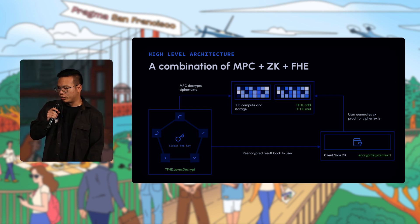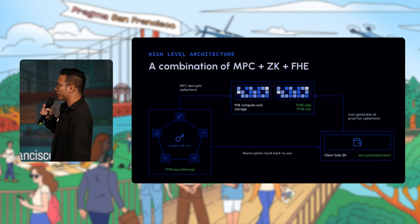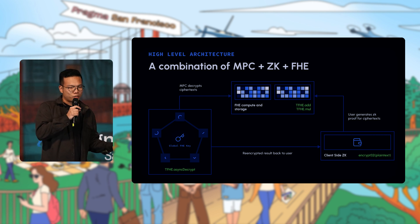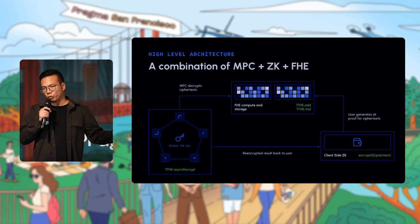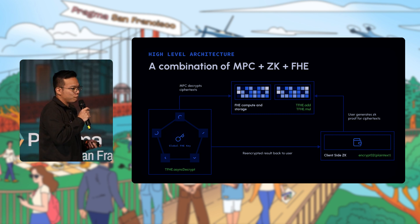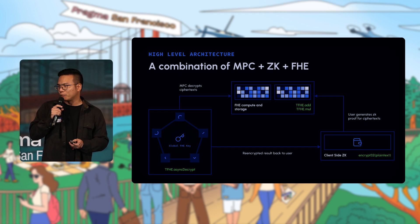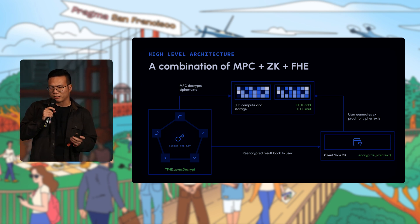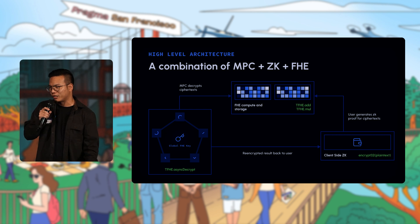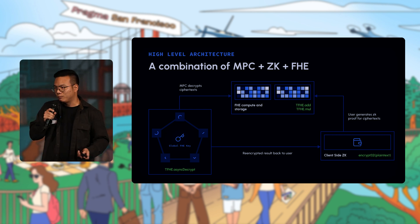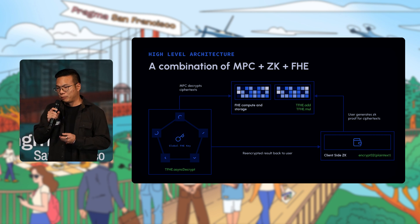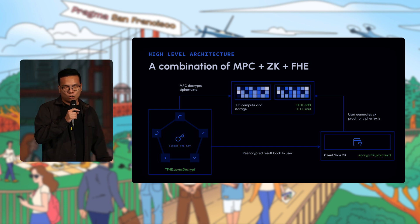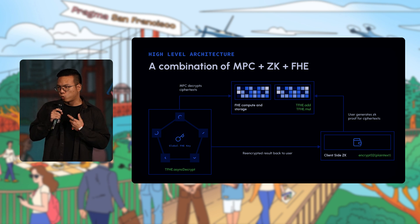For compute, we use FHE. Compute nodes perform additions, multiplications, and divisions based on a set of instructions. FHE has the property of being deterministic — if you add two ciphertexts together, the result is always the same. This means on a consensus-based blockchain you can verify that work has been done correctly. This is very aligned with the original cypherpunk idea of using cryptography to solve for privacy, and it's actually quite suitable in form factor for blockchain.